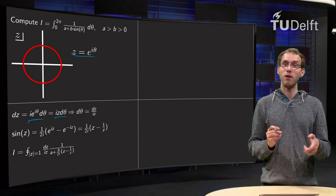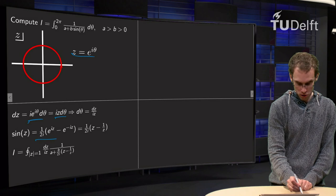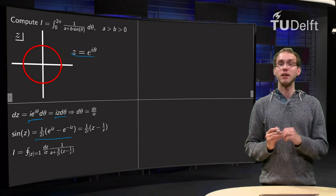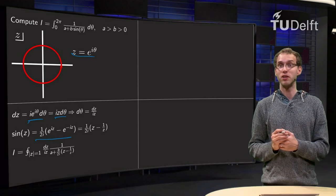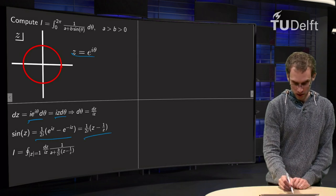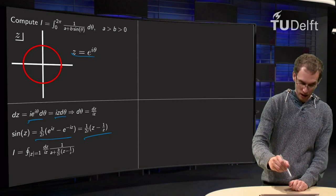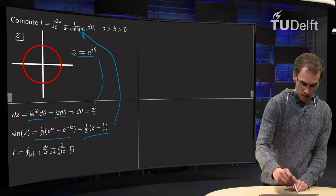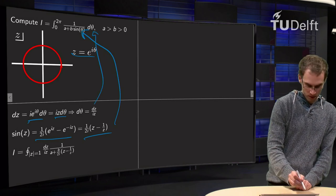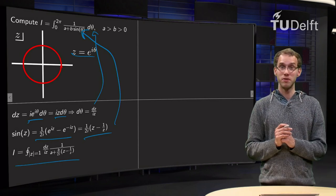Then we have to get rid of sin theta. Well, sin theta equals e to the power i theta minus e to the power minus i theta, with a 1 over 2i, small typo here, and we have e to the power i theta equals z and e to the power minus i theta equals 1 over z, so that's how we get sin theta. We plug everything in, over here, into our integral, and now we have our integral in terms of z.